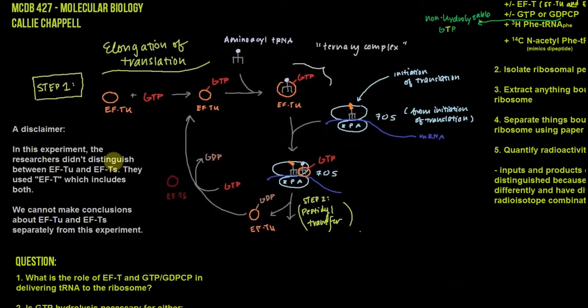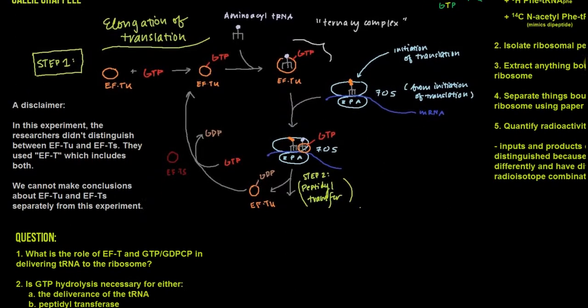Here's a disclaimer: if that was over your head, don't worry about it. In this experiment, it was so basic they didn't even know that EF-Tu and EF-Ts were two separate proteins. All they knew is there was something called EF-T that somehow influences aminoacyl-tRNA being brought into this ribosomal complex. We can't make conclusions about EF-Tu or EF-Ts from this experiment, and I'm going to be really clear about what we can conclude.